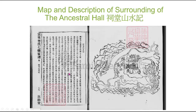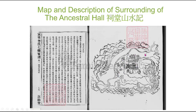Next we have the map and description of the surroundings of the ancestral hall, again with details of mountains and roads. The ancestral hall is right here in the middle, with houses on the side, trees on the back, and other landmarks surrounding it.